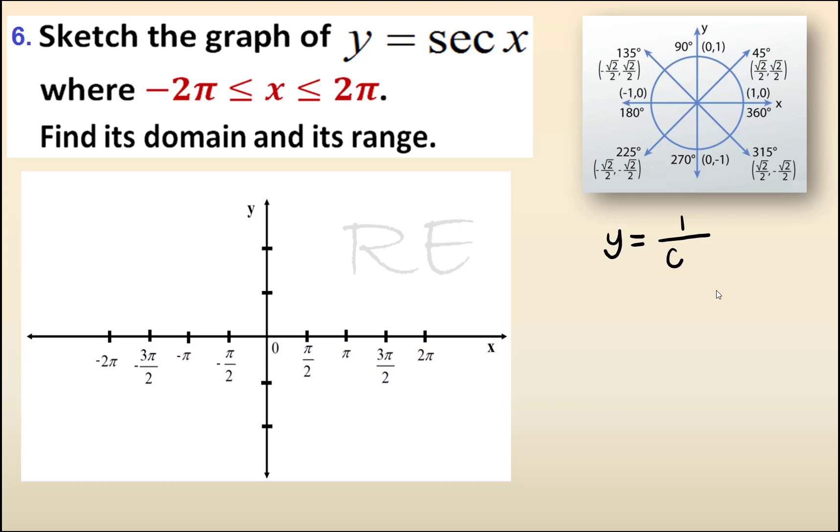we will start by looking for the points at which cosine x is equal to 0. These are going to be the vertical asymptotes and the function will be undefined.